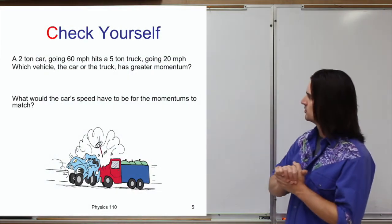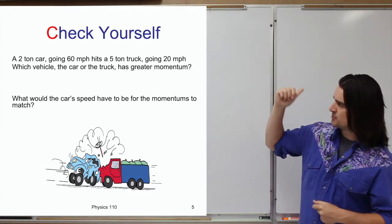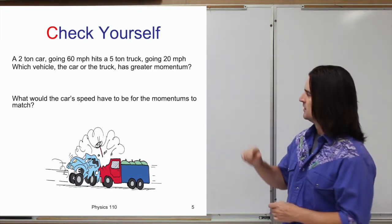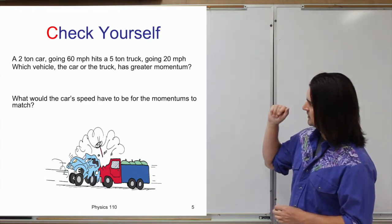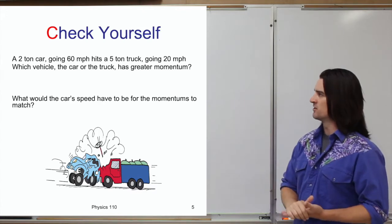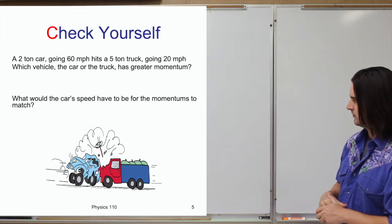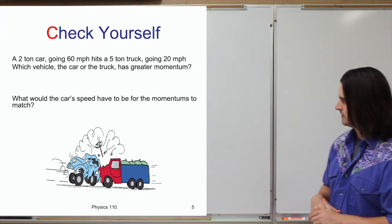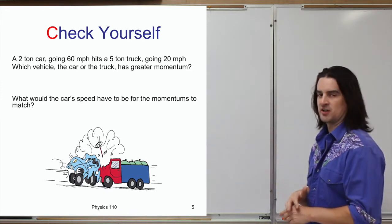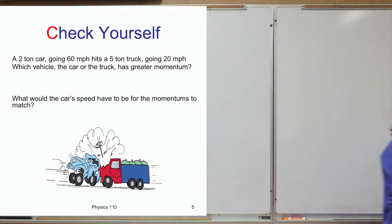Now a quick check for yourself. We have a two-ton car going 60 miles per hour, and a five-ton truck going 20 miles per hour. Which of those vehicles has a greater momentum? Go ahead and hit pause, try to answer these questions, and we'll look at the answers in a second.